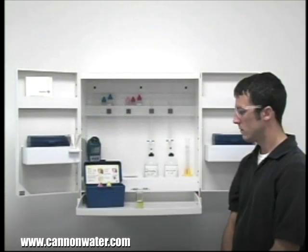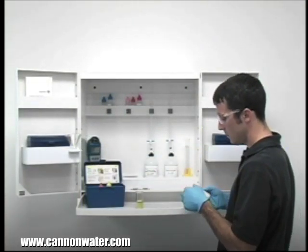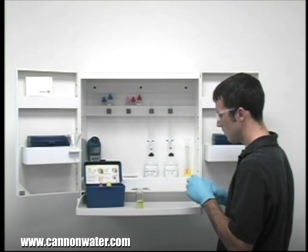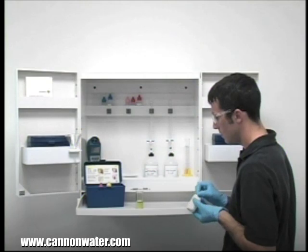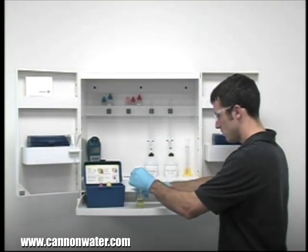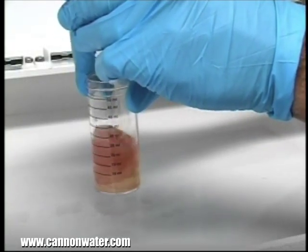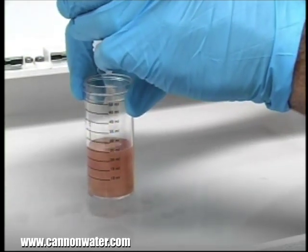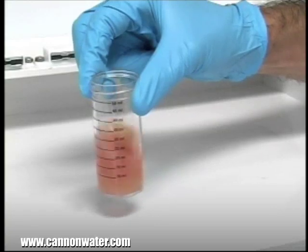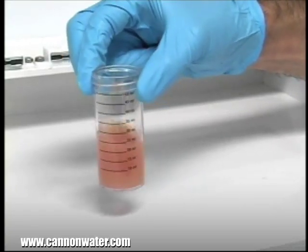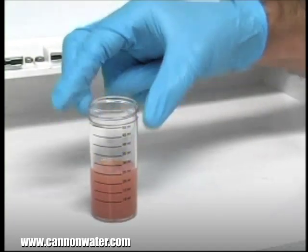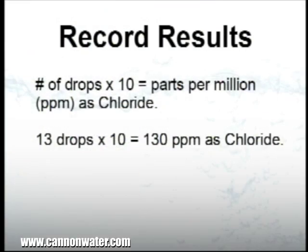The next step according to the endpoint ID procedure is to perform the titration. Each bottle of titrant is labeled with the equivalency and sample size it was manufactured for. It's important to make sure you have the proper titrant and the proper sample size for this titration. The bottle of titrant contains a dropper tip, therefore it's important to hold the bottle vertically to make sure you get a consistent drop size. After the addition of each drop of titrant, swirl the vial to make sure the sample is properly mixed. According to the endpoint ID procedure, the titration is complete when the sample changes from yellow to brick red. In this example, each drop was equivalent to 10 parts per million as chloride. The sample took 13 drops to reach endpoint, therefore this sample contains 130 parts per million as chloride.